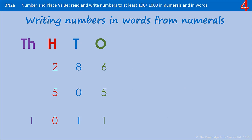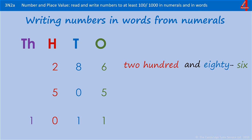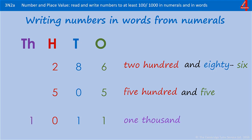Here are some for you to have a go at — these three numbers, write them in words. Pause the video and see how you get on. The first one: two hundred, eight in the tens so that's two hundred and eighty, and six in the ones — two hundred and eighty-six. The next one: five hundred, nothing in the tens, but a five in the ones — five hundred and five. The last one goes into the thousands: one thousand, nothing in the hundreds, then a one in the tens and a one in the ones — remember that's eleven — so you have one thousand and eleven.